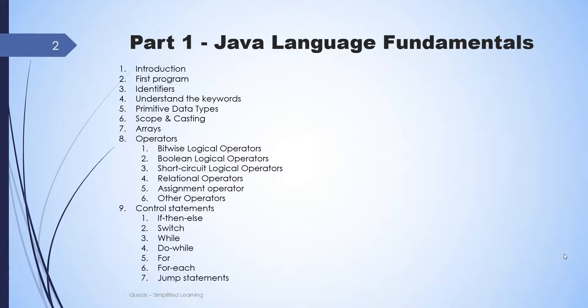Further, we will introduce keywords that have special meanings in Java. We will then cover primitive data types, scope and casting, followed by arrays. Next, we will deep dive into operators. We will conclude this part with control statements.